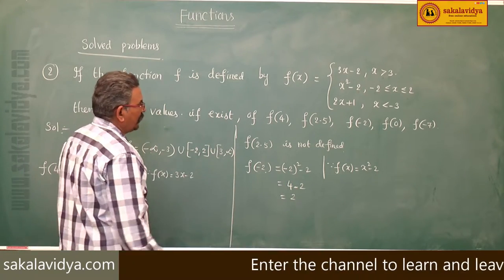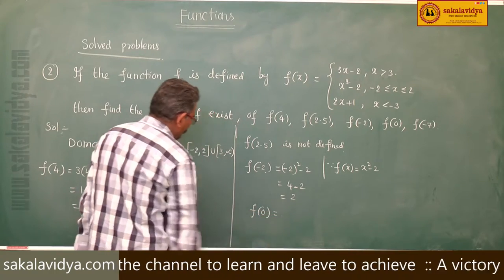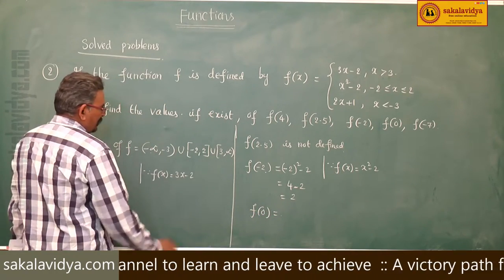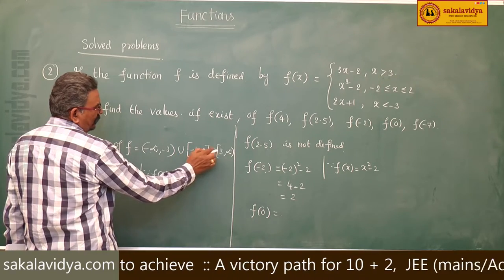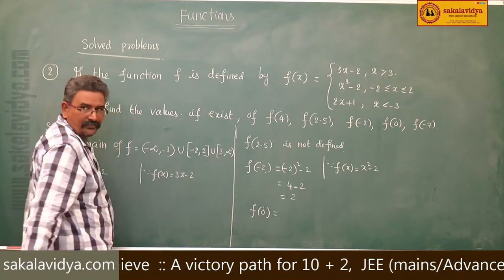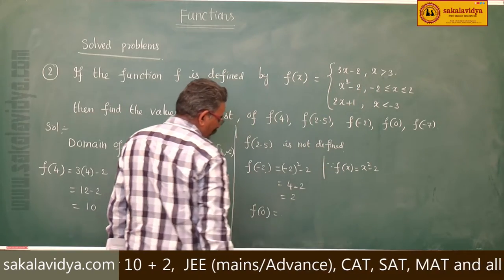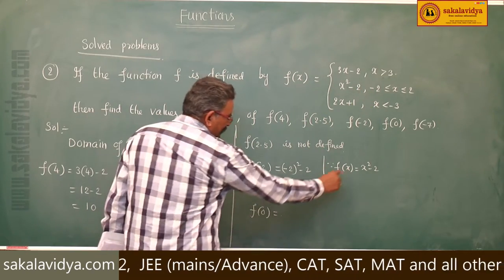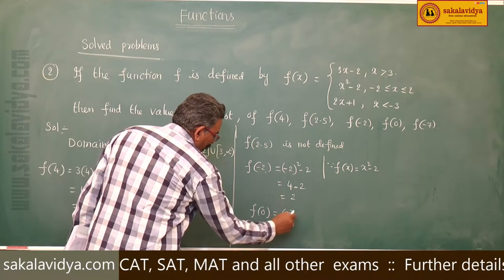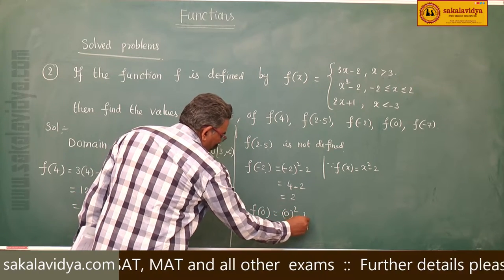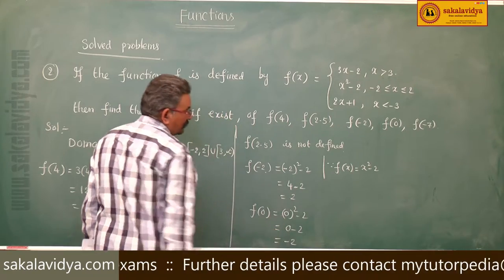Now f(0). The value 0 lies in the interval [−2, 2], so f(x) = x² − 2 again. Therefore, f(0) = 0² − 2 = 0 − 2 = −2.